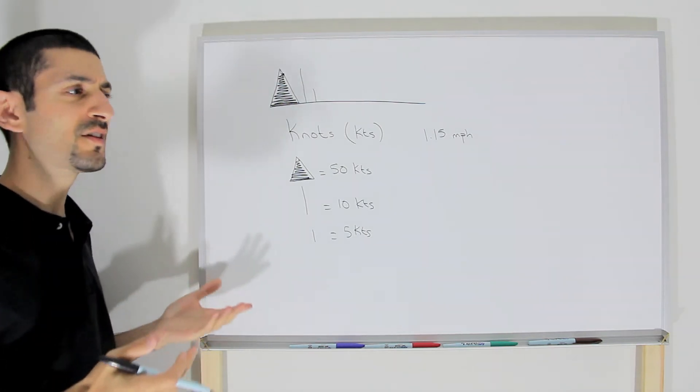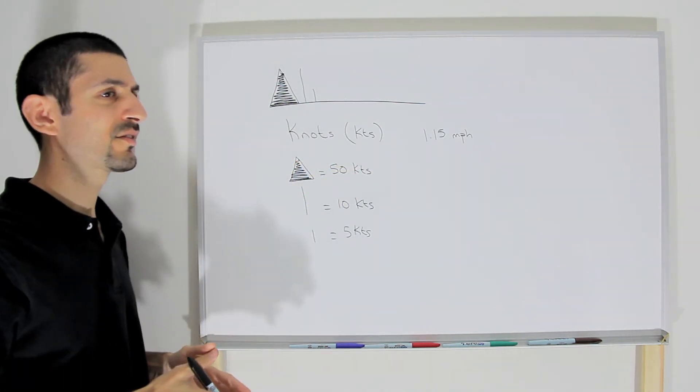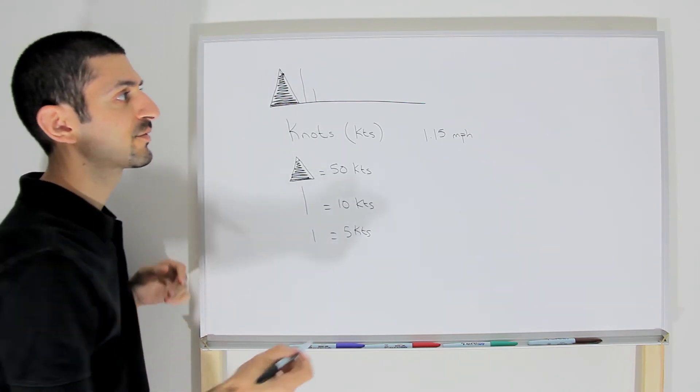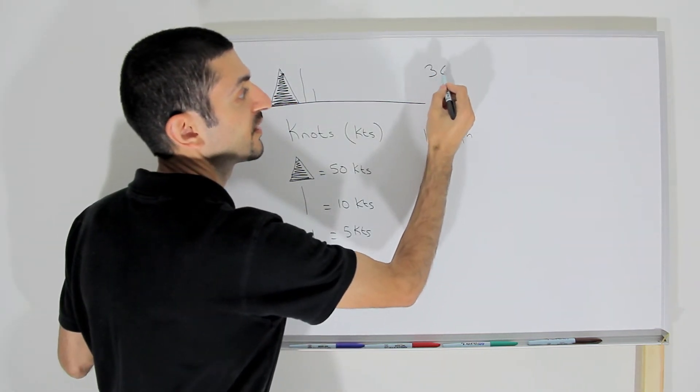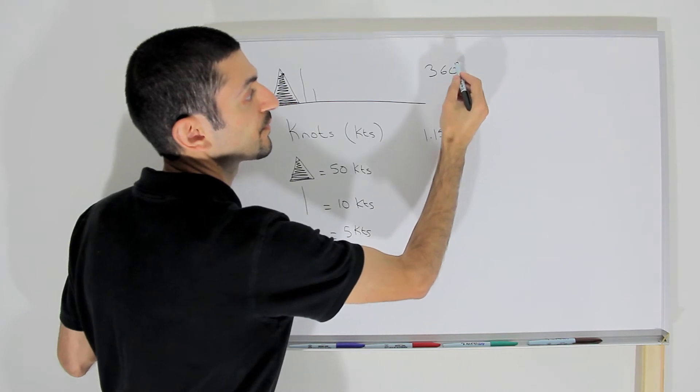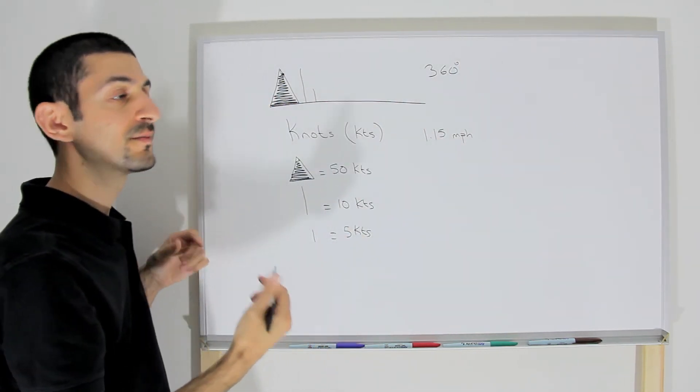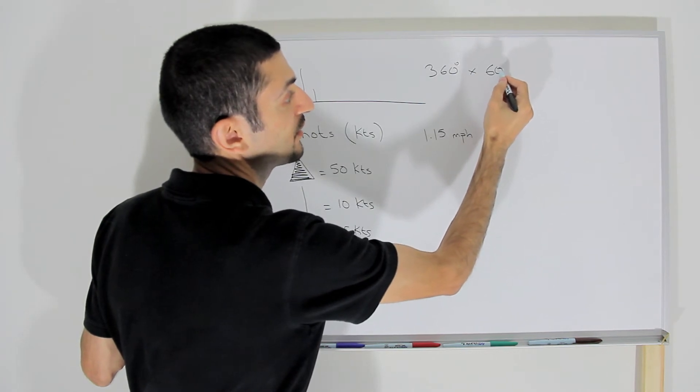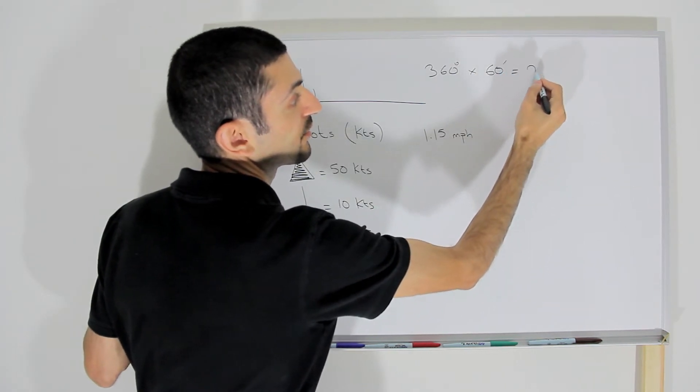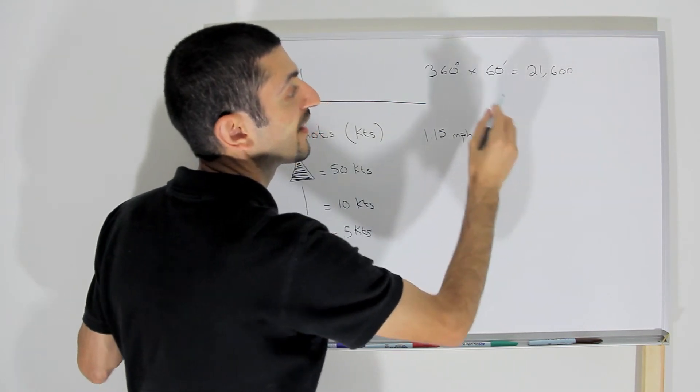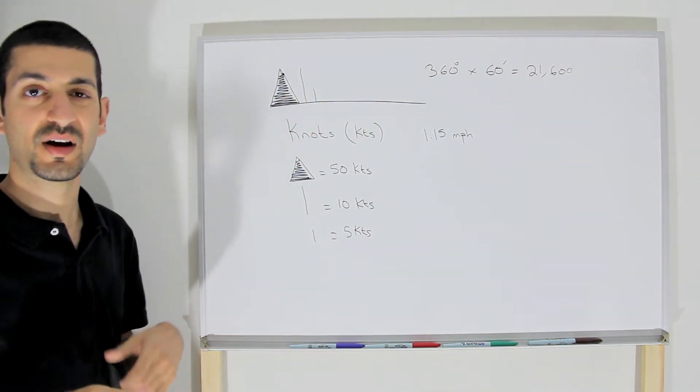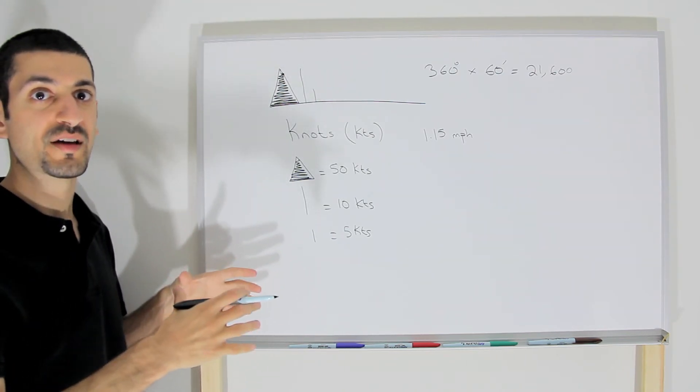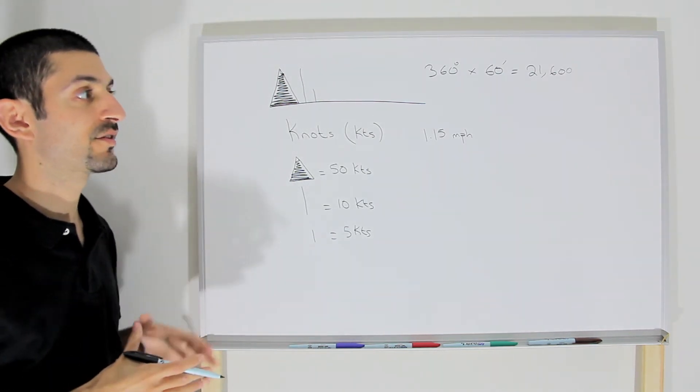The knots are basically a relic of the age of sail and it is simply derived from the fact that you have 360 degrees in a circle, and each degree has 60 minutes of arc to it. And that equals 21,600, and this is the number of nautical miles that are found around the earth along the equator. And that's how knots are derived.